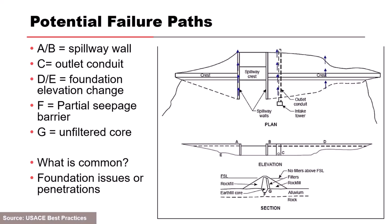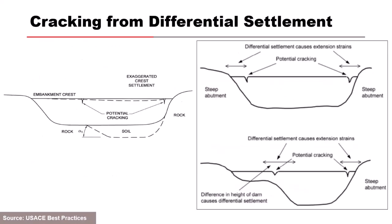If you've got seepage on one side of your spillway wall and you're doing a rehab, you might want to look at the other side too because you've got similar conditions. Differential cracking from differential settlement occurs where you get steep valley profiles — cracks correspond to where those profile changes are. Also with a soil-rock foundation, the soil settles while rock doesn't compress as much, resulting in cracking.